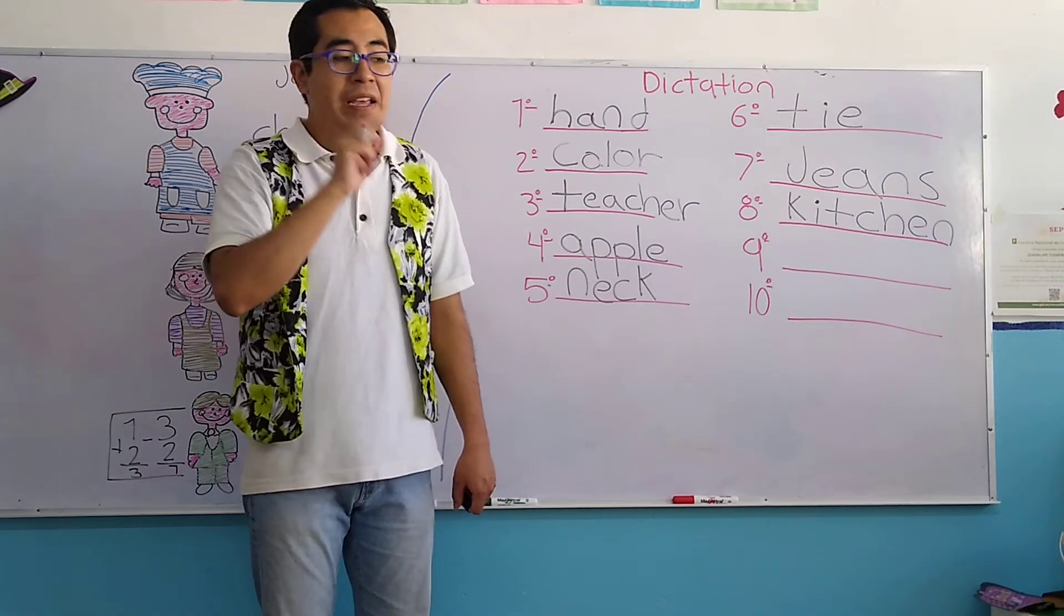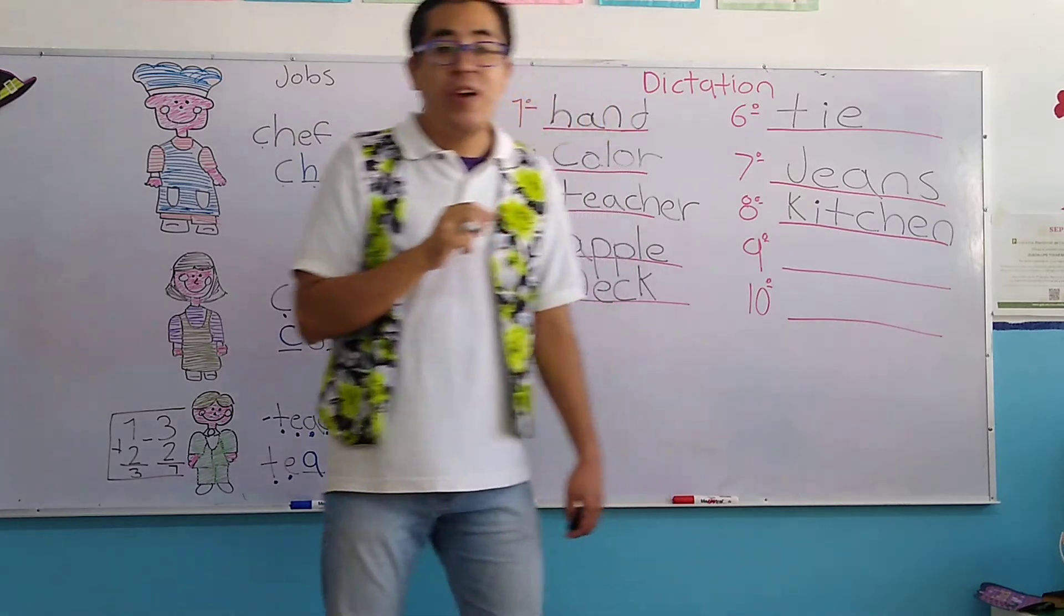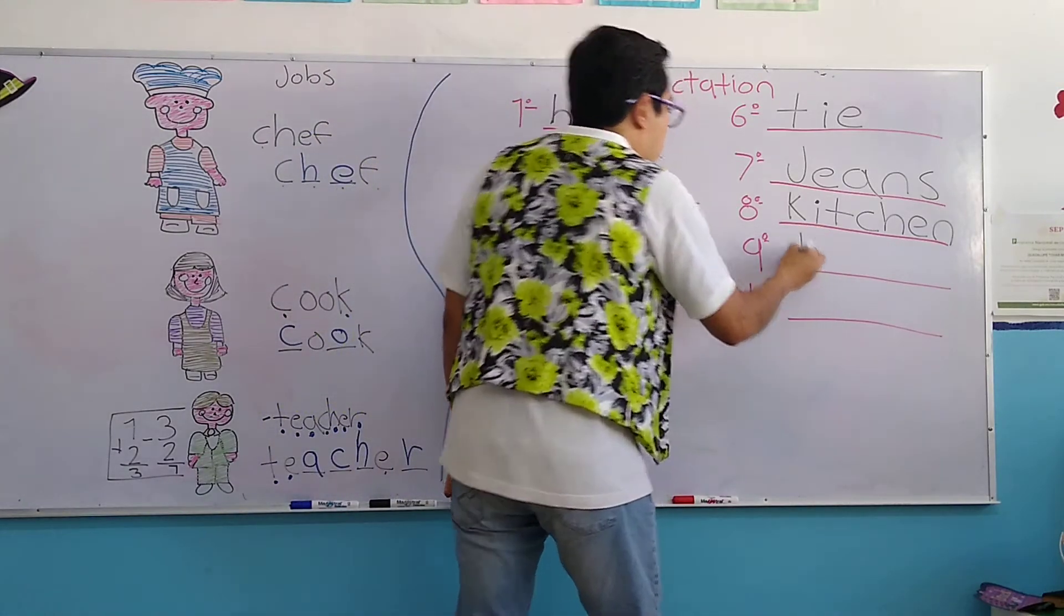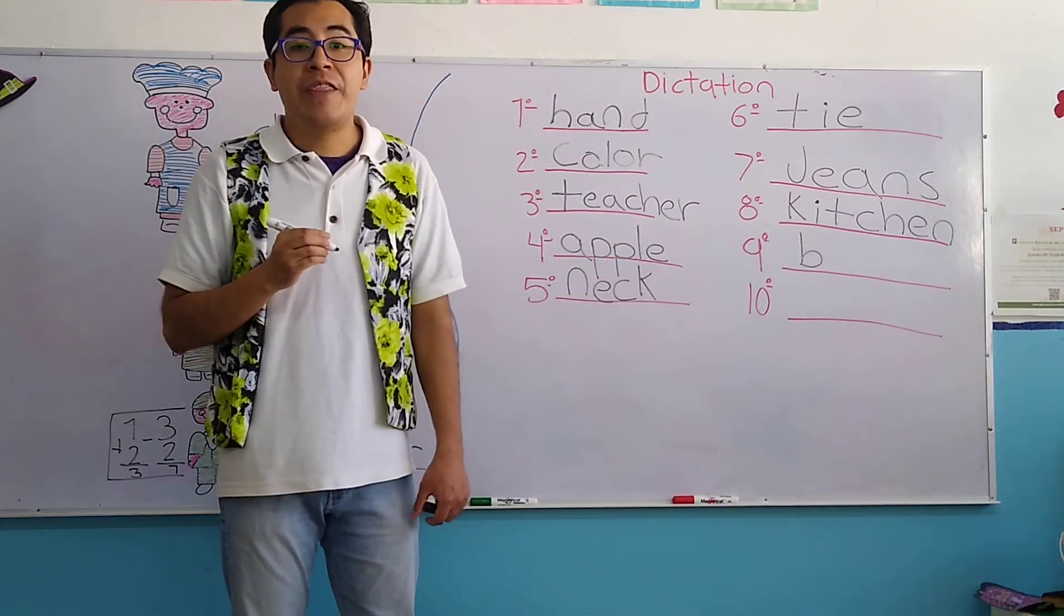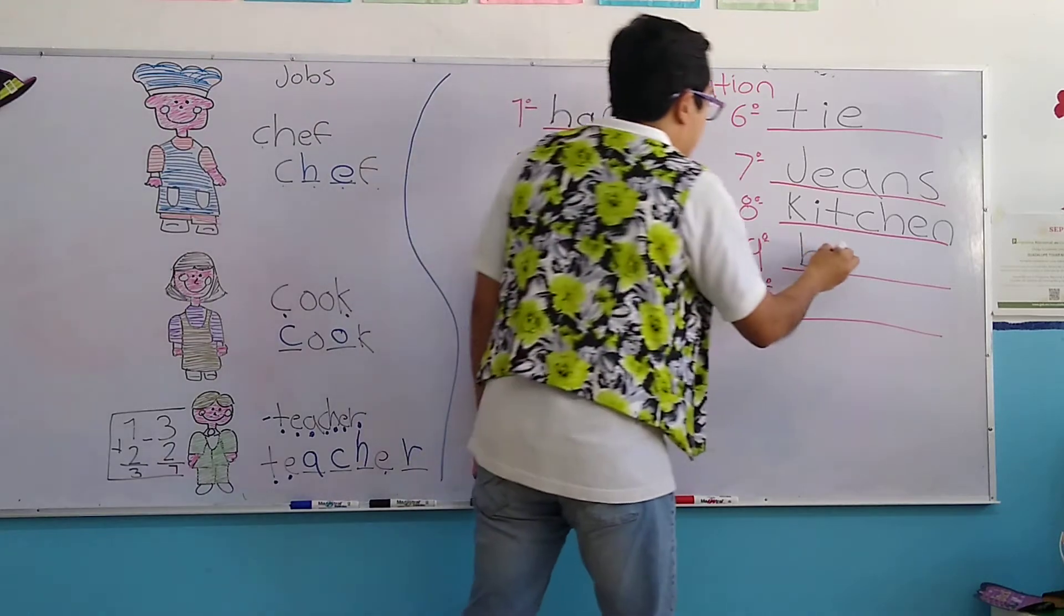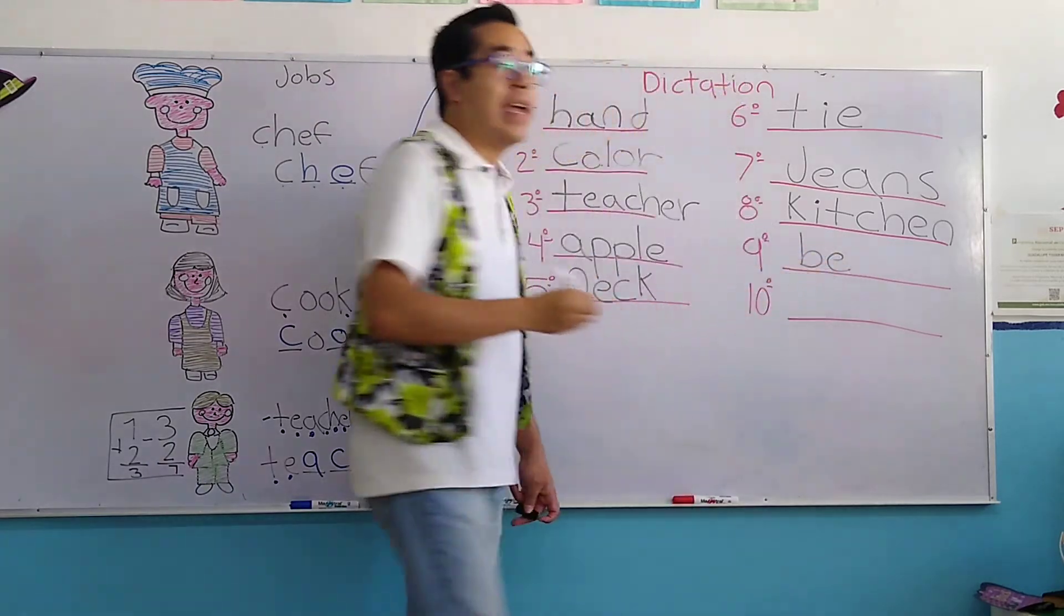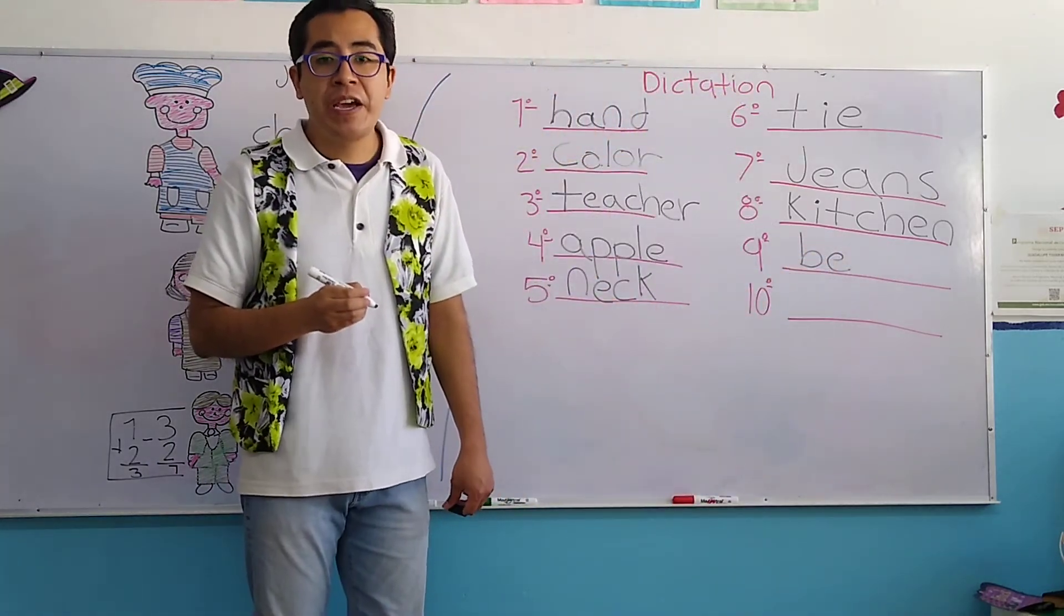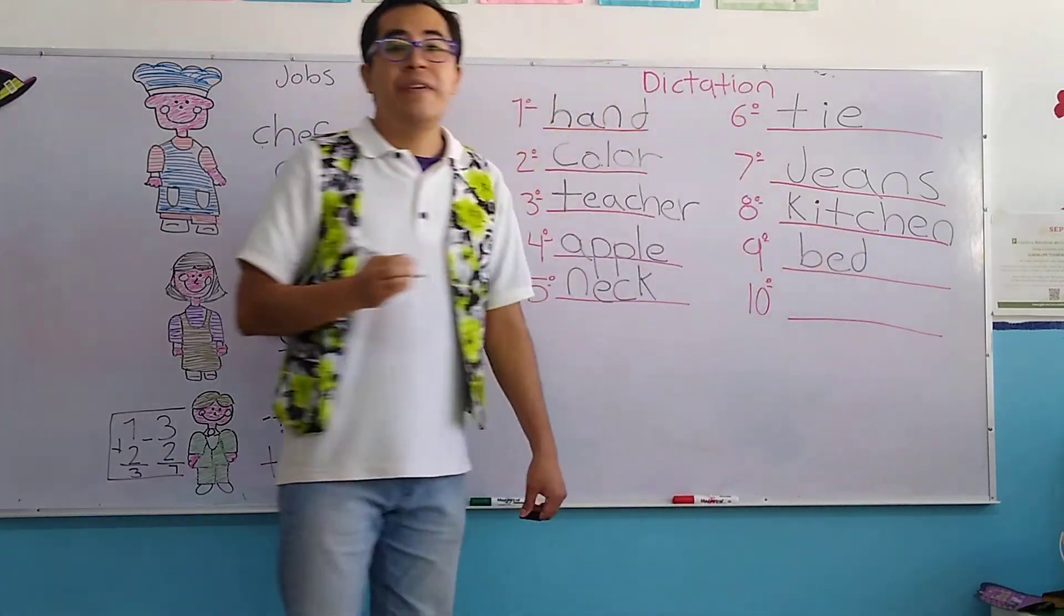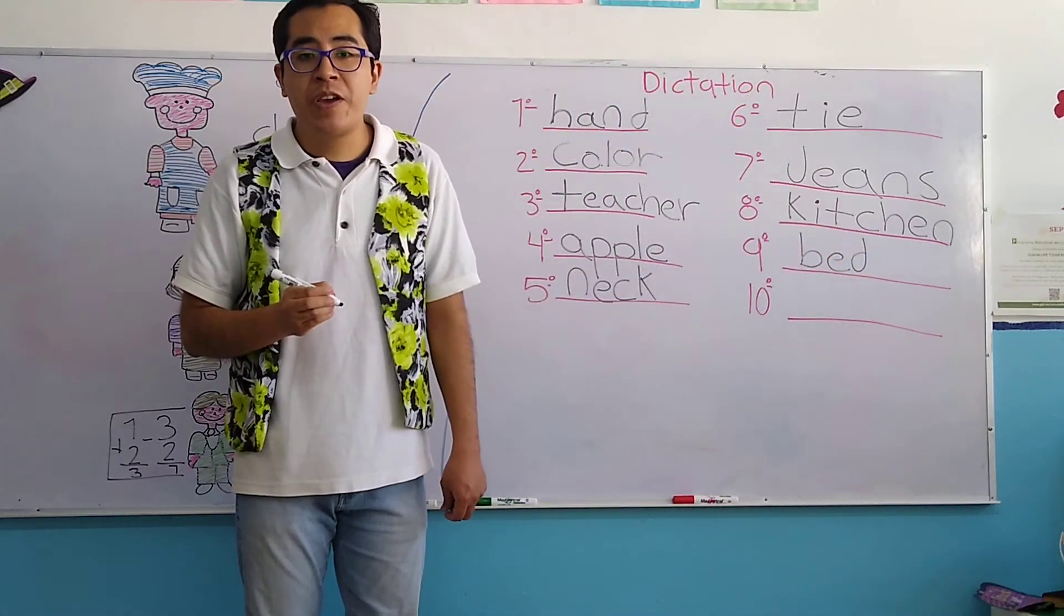Number nine. Letter B of Brenda. Letter E of Enrique. Letter D of Diego. Letter R of Rodrigo.